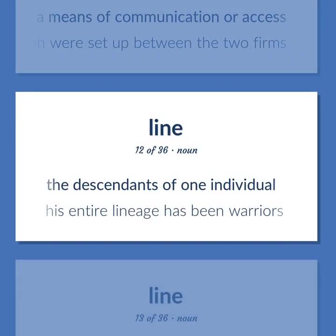Line: the descendants of one individual. Example: his entire lineage has been warriors.